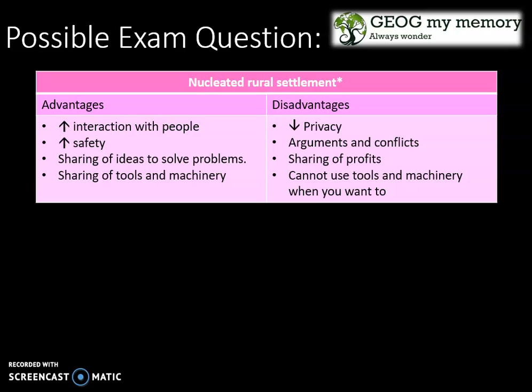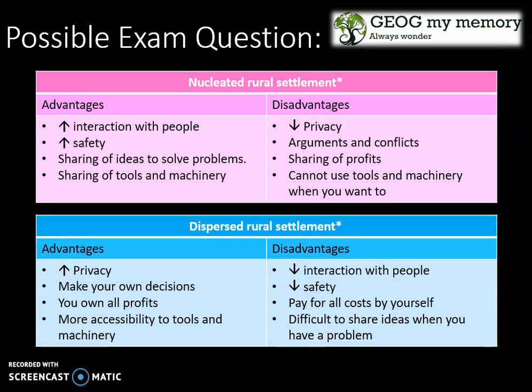A dispersed rural settlement has the opposite advantages and disadvantages. Advantages include an increase in privacy, you are able to make more decisions on your own, you own all your profits, and you have more accessible tools and machinery. Disadvantages include a decrease in interaction with people, less safety, you pay for all costs by yourself, and it is difficult to share ideas when you have a problem.